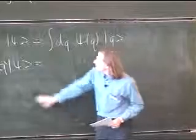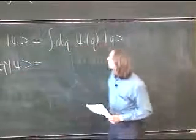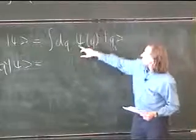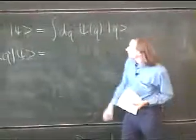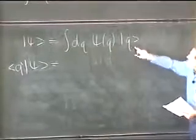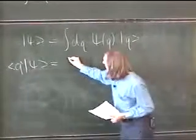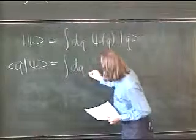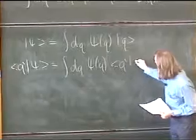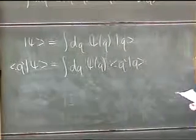So how do we work that out? Well, we just take the inner product. So this state goes in here. This is just some integral, some function of complex numbers. So basically, that goes through to here. So we have an integral dq psi of Q, and then we have Q prime Q like that.